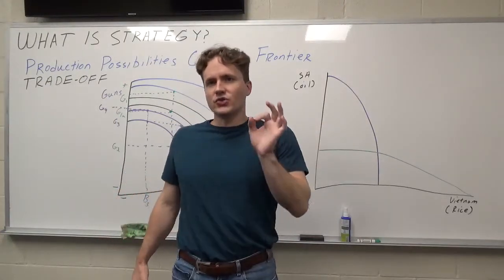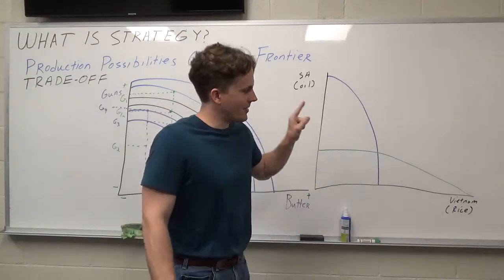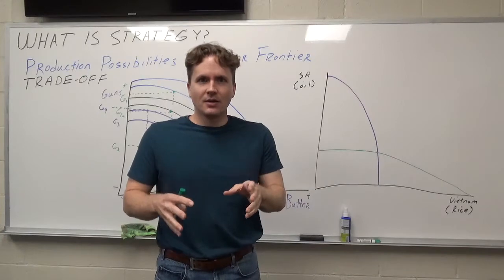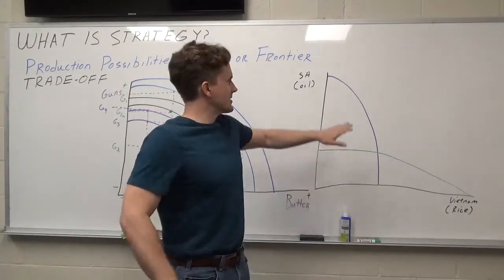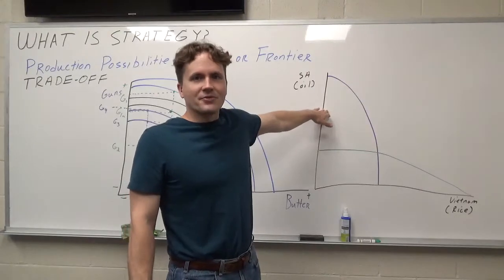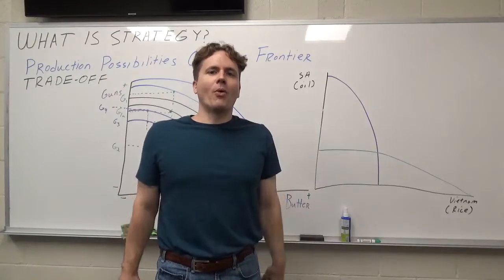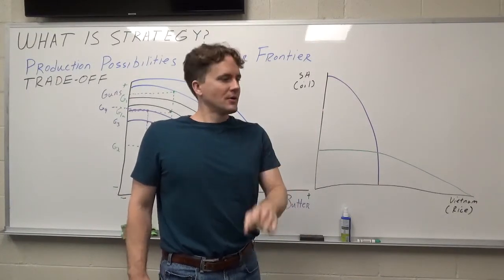And so when we talk about strategies being different, what makes sense for Vietnam is to focus on producing as much rice as they possibly can, maybe more than their population needs, and then to sell the leftover rice to their Saudi Arabian friends who have way more oil than they need and they just trade. That's the whole point of being different.